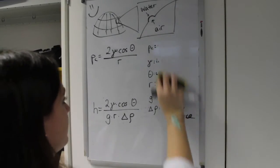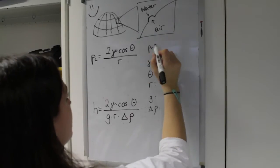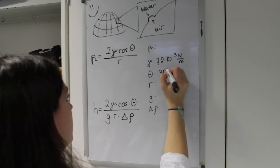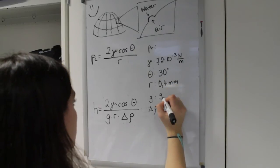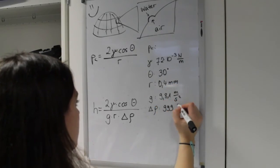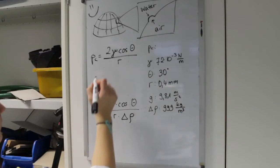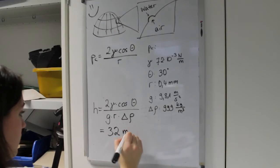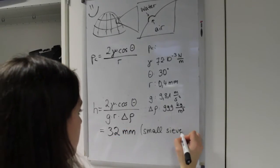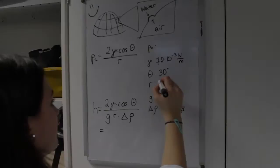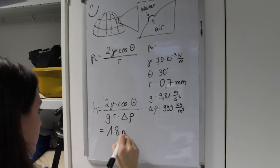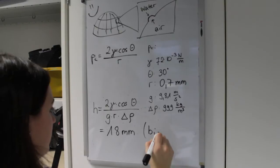In our experiment, gamma is given by 72 mN over meter, theta is 30 degrees, the radius is 0.4 mm and delta rho is 999 kg per cubic meter. That means the maximum height of the air column in the small sieve is 32 mm. As you remember, our air column was 22 mm high. For the bigger sieve with a pore throats radius of 0.7 mm, the maximum height is 18 mm. In our experiment, we got about 10 mm.